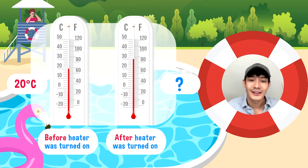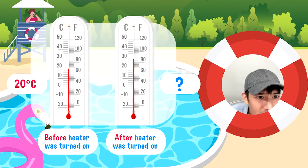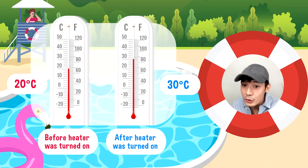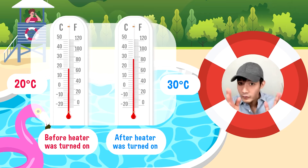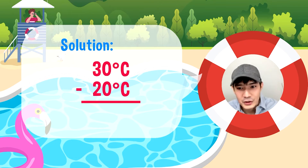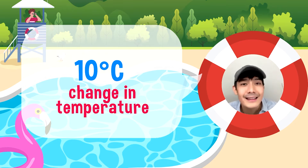Kaya naman, kung kanina nasa 20 degrees ang temperature ng pool na ito, tumaas dahil binuksan natin yung heater. Ngayon, ano na yung ating reading? Kung kanina 20 degrees Celsius, ngayon sakto nasa 30 degrees Celsius. Naging 30 degrees Celsius na ang temperature sa swimming pool nung binuksan natin yung ating heater. Ano yung naging change dito? To solve for the change in temperature, dapat alam natin yung given natin — these are 20 and 30. Kaya naman, gamitin natin subtraction: 30 degrees Celsius minus 20 degrees Celsius will give us 10 degrees Celsius. Don't forget the label. Therefore, ang change in temperature nung binuksan natin yung heater ay 10 degrees Celsius.